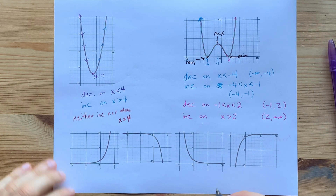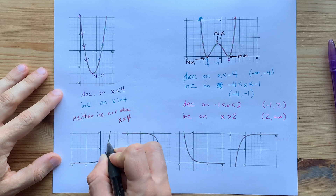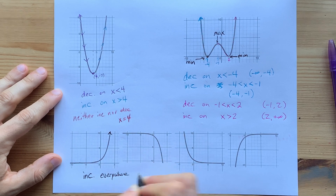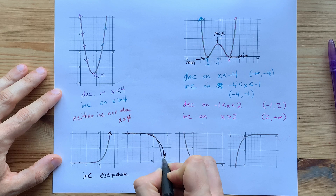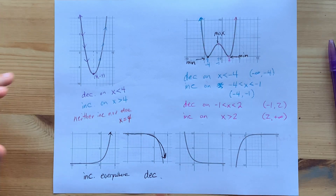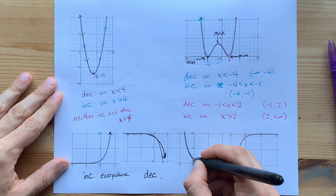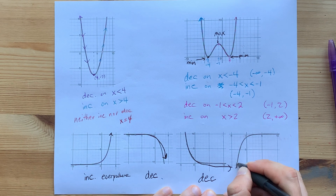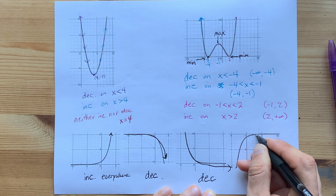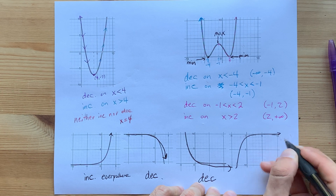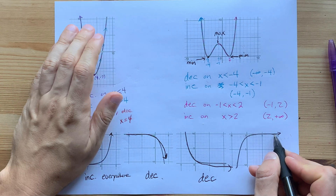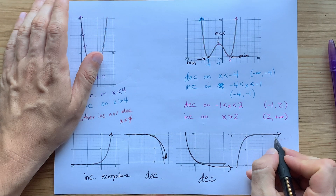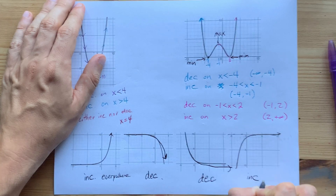These are exponential functions. As I go from left to right, I'm moving upward — this one is increasing everywhere. Going from left to right on this one, I'm moving downward — this one is decreasing everywhere. This one as well: left to right, pencil moves downward, decreasing everywhere. Starting on the far left on this last one, it looks like it flattens, but it's actually getting higher and higher, closer and closer to the asymptote — never actually reaching it, but it is increasing everywhere.